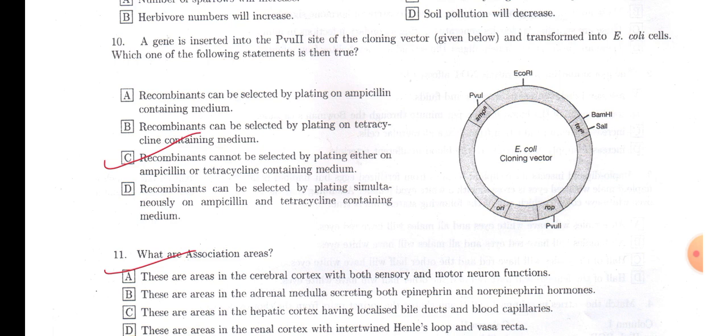So you cannot select this plasmid, actually recombinant plasmid, as it does not contain any antibiotic resistant gene in that region of restriction site. So option C will be the answer: recombinants cannot be selected by plating either on ampicillin or tetracycline containing medium.